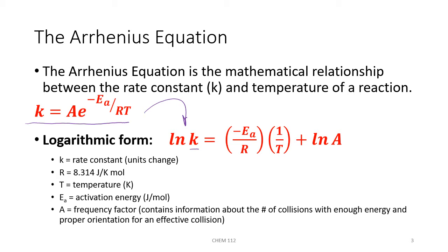R is the universal gas constant with a value of 8.314 joules over moles times Kelvin. Ea is our activation energy in units of joules so that it cancels with our gas law constant R. T is temperature in units of Kelvin. In the natural log of A, A is something known as the frequency factor, or sometimes the pre-exponential factor. This contains information about the number of effective collisions, or collisions with enough energy, and the proper orientation.